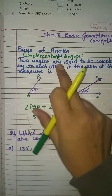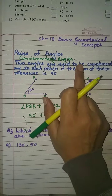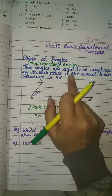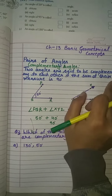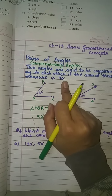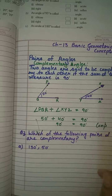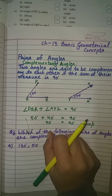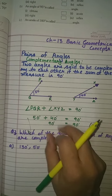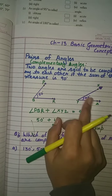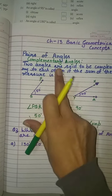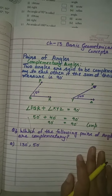Two angles are said to be complementary to each other if the sum of their measures is 90 degrees. If any two angles, when we add them, the sum of both angles is 90 degrees — that is your complementary angles.